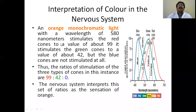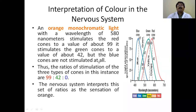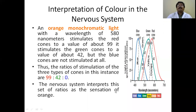The nervous system interprets color based on ratios of cone stimulation. For example, orange monochromatic light at 580 nm stimulates the red cones to about 99%, the green cones to 42%, and the blue cones not at all. The nervous system interprets this ratio of 99 red, 42 green, 0 blue as the color orange.